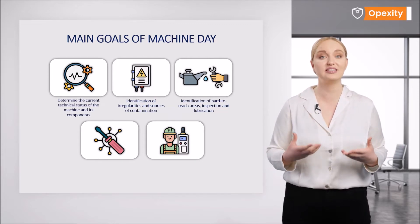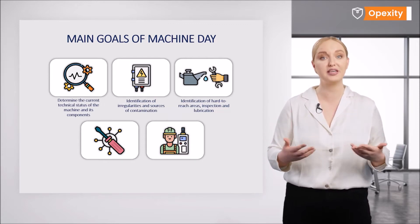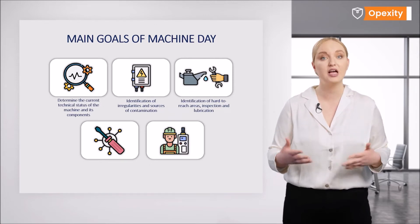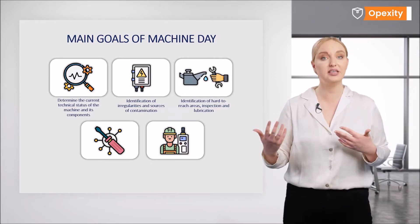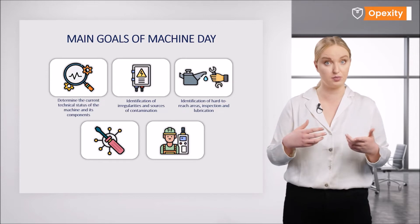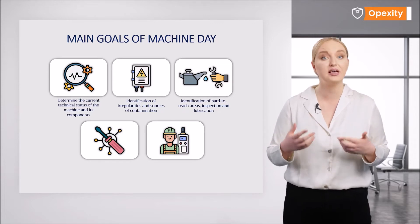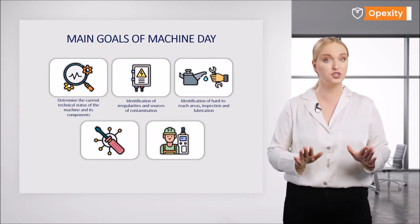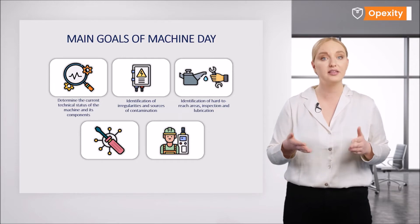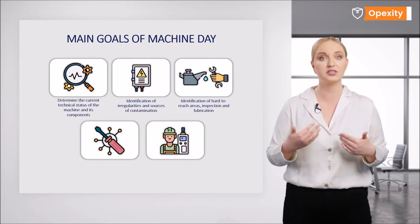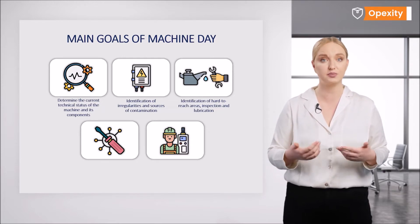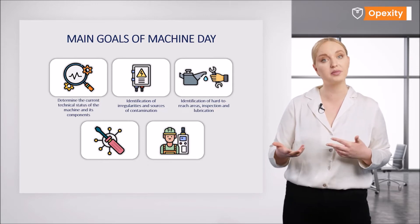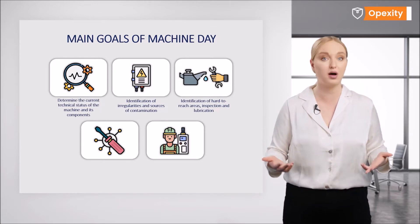Machine Day is the day that starts the preparation of the machine for the operator's prevention. So if we already see here that an instrument — for example, a pressure gauge — is positioned in such a way that the operator has to stop the machine to read the value, then this point should be recorded in order to set up the instrument in the future so that the operator can perform the inspection as efficiently as possible.